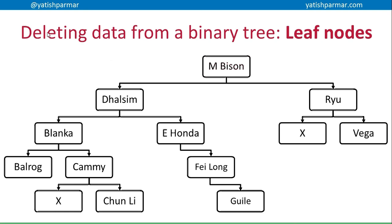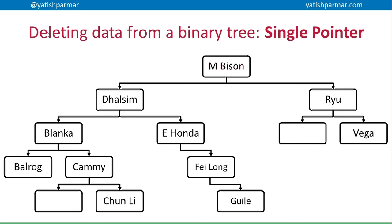If you want to delete data from a binary tree, it gets more complicated. Deleting Balrog or Guile is straightforward because they're just terminal nodes — you delete it and change the left pointer of the parent node to null, so we know there's no node on that side anymore. It's a bit more complicated when a node has a single pointer. If I delete Fei Long, Guile needs to be connected to something. Comparing E Honda to Guile, Guile is greater, so E Honda needs a new right pointer pointing at Guile.